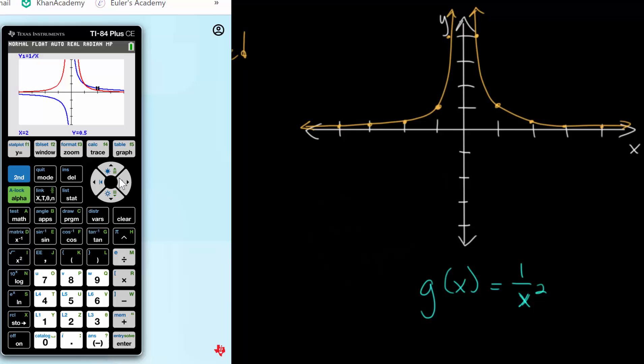So these are our two parent functions, and we can consider them individually. Let's turn off the 1 over x. And for this function we actually just graphed by hand, we can check that everything makes sense.